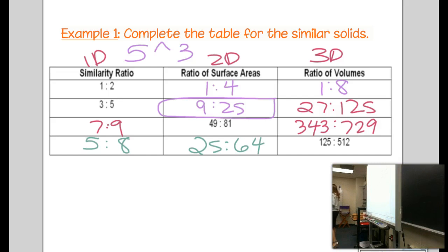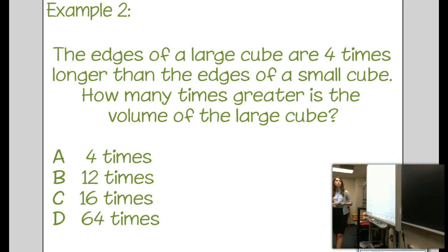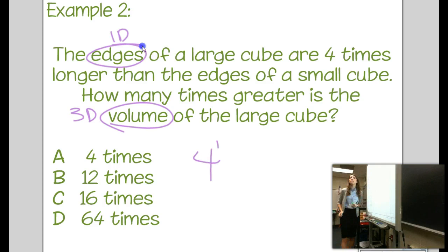All right, so we know how to do it when it's in table form. Do we know how to do it when it's in word problem form? Let's find out. The edges of a large cube are four times longer than the edges of a small cube. How many times greater is the volume? Don't say four. Whatever you do, don't say it's four times greater. Because if the sides are four times greater, the volume is much, much, much, much more. A side, an edge, sorry, an edge. Is an edge 1D, 2D, or 3D? 1D. A volume, 1D, 2D, or 3D? 3D. 4 is 1D right now. We want to make it 3D. How do you take a number and make it 3D? Cube it. Cube four. The volume is 64 times bigger. It's not 12 times bigger. It's not 16 times bigger. It is 64 times bigger.